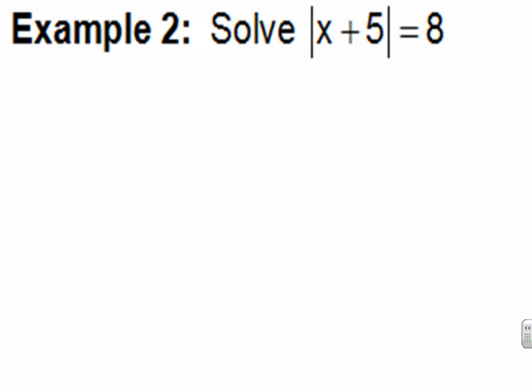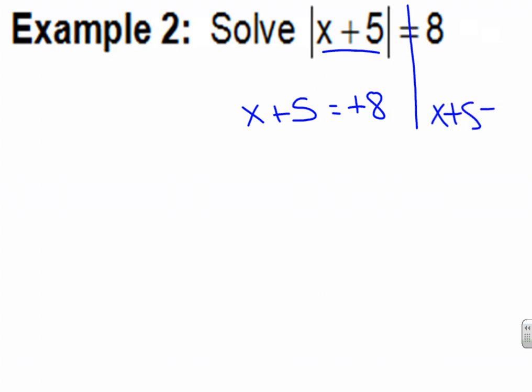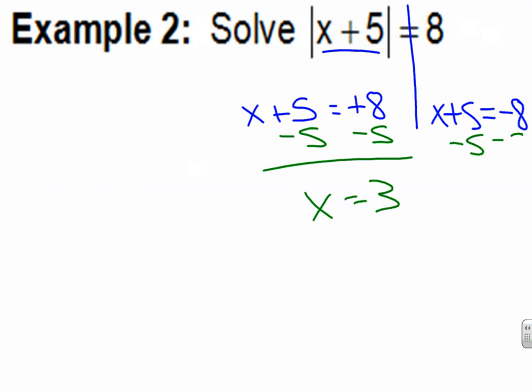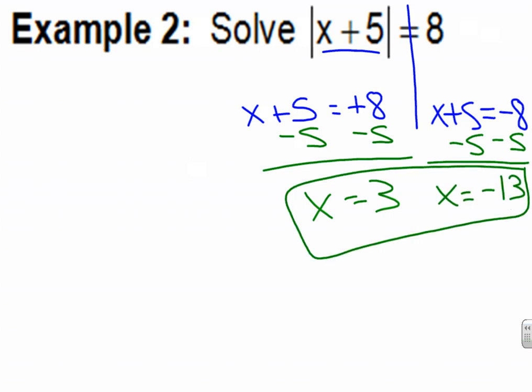Pause the video now as you try example two. Press play to go over your answer. I ask the same question: is everything inside the absolute value on the side that has the X? Yes. It looks so nice, I write it twice — what's inside the absolute value equal to the positive answer, and equal to the negative answer. This one requires a little solving because we subtract 5. My first answer is X equals positive 3, and my other answer — negative 8 minus 5 — is X equals negative 13. These are my two answers.